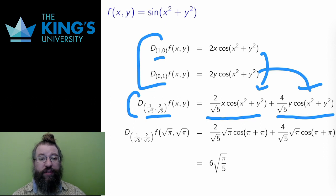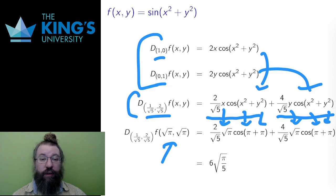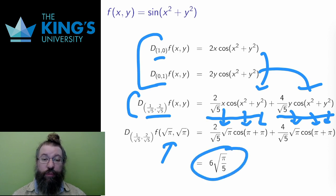If I want this at a specific point, say √π, √π in the plane, then I replace x and y with √π and calculate. And cosine of 2π is 1, so I get a result of 6√π/√5. This is the slope, positive so upward, at the point (√π, √π), looking in the (1, 2) direction.